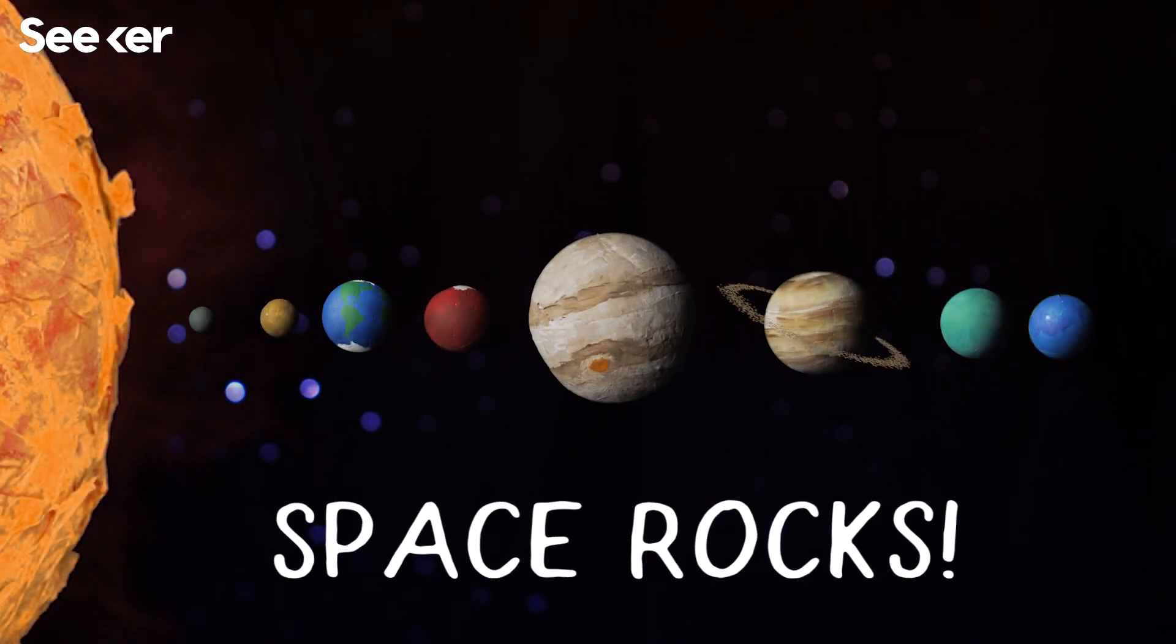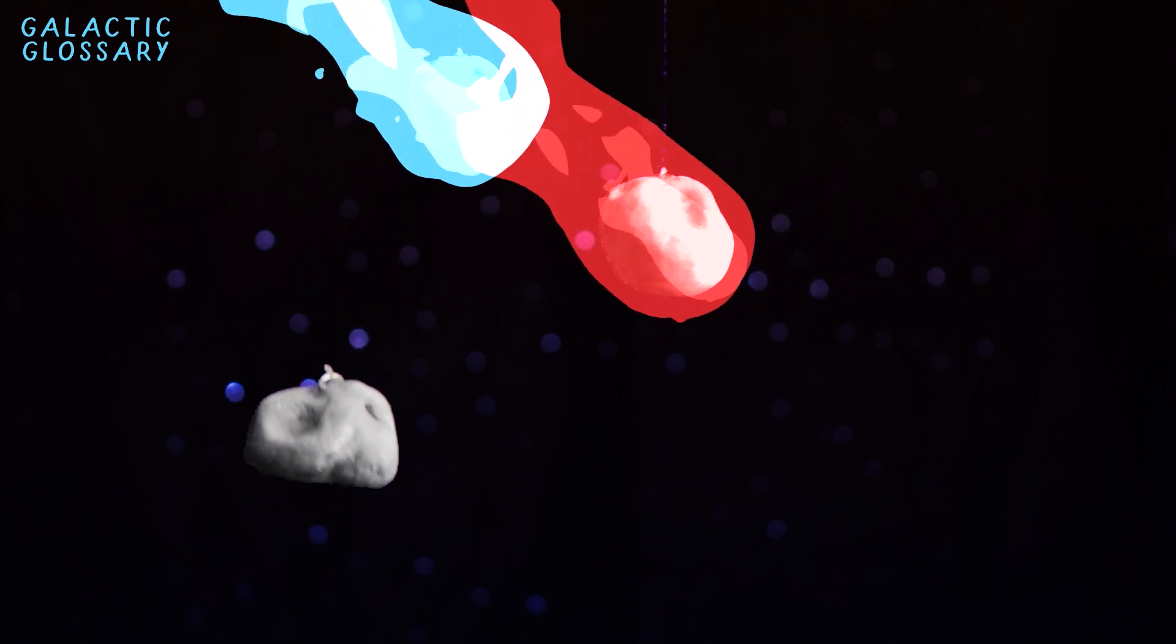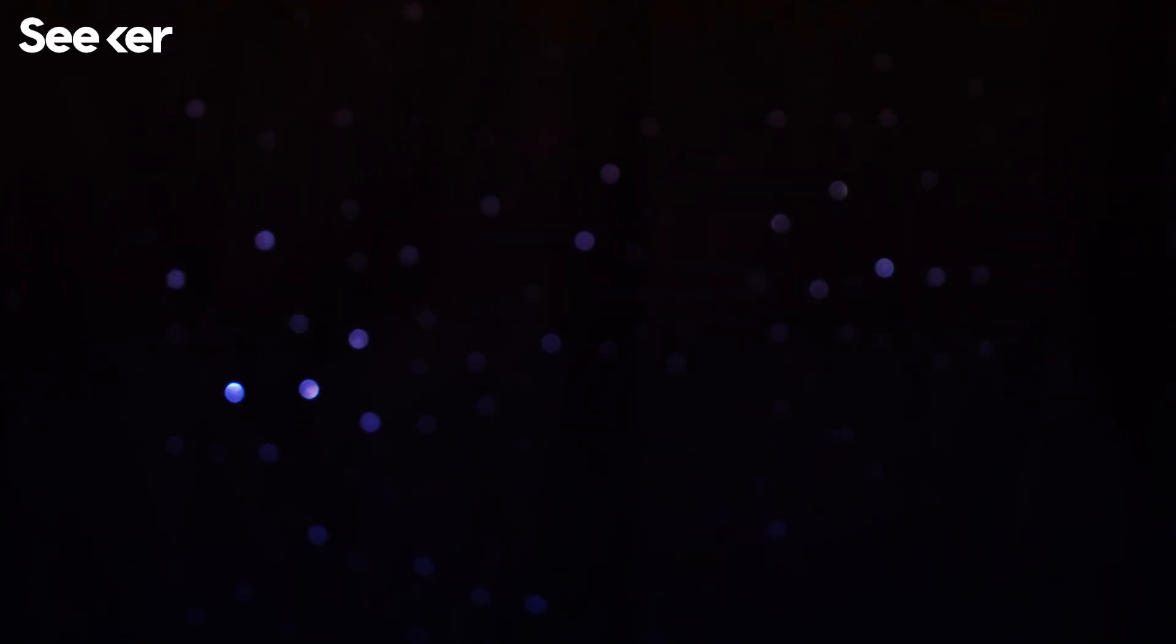We all know space rocks, but what about the rocks in space? Asteroids, comets, and meteors are hurtling through the solar system. So how do you tell them apart? And which rocks could hit our planet?